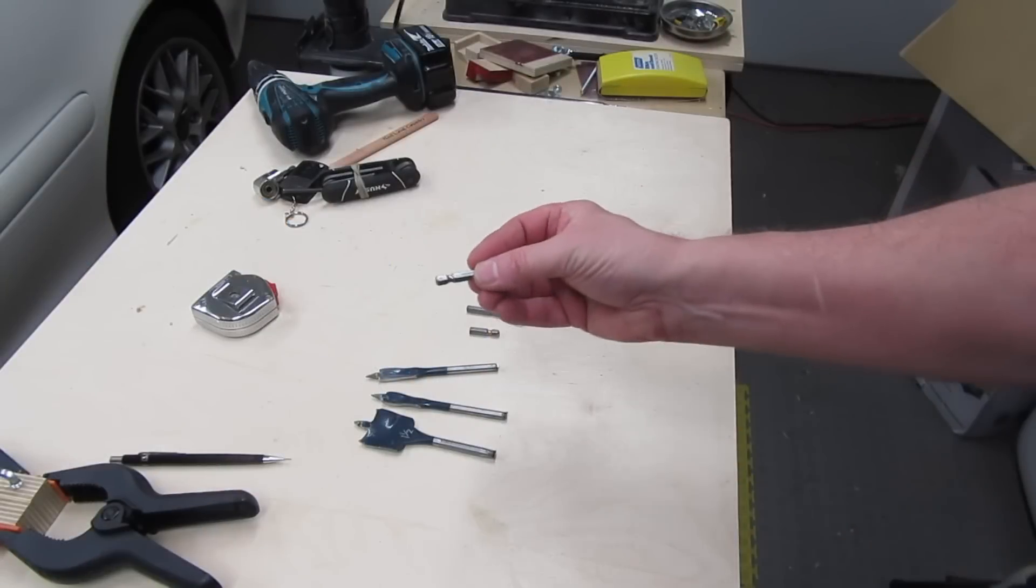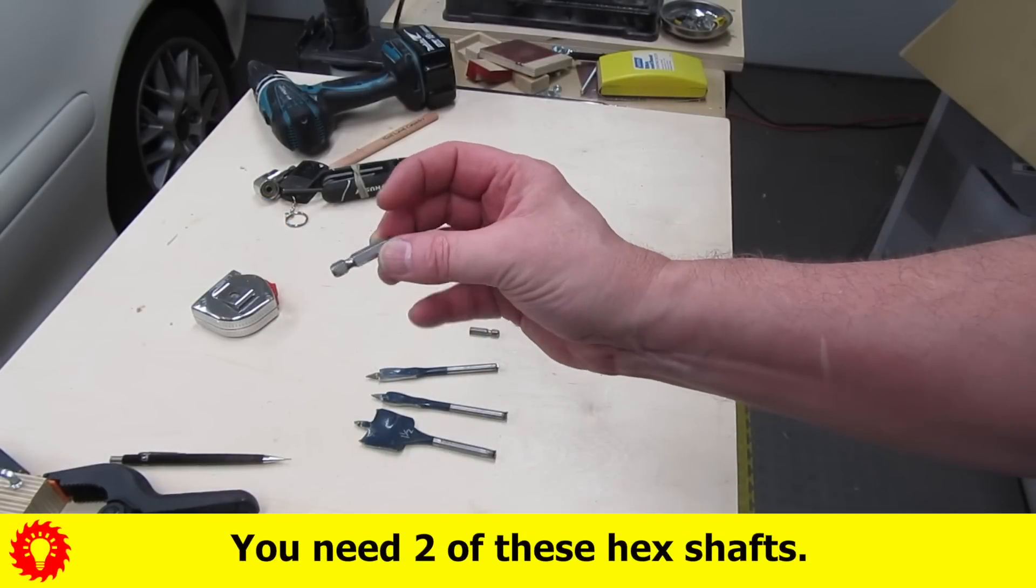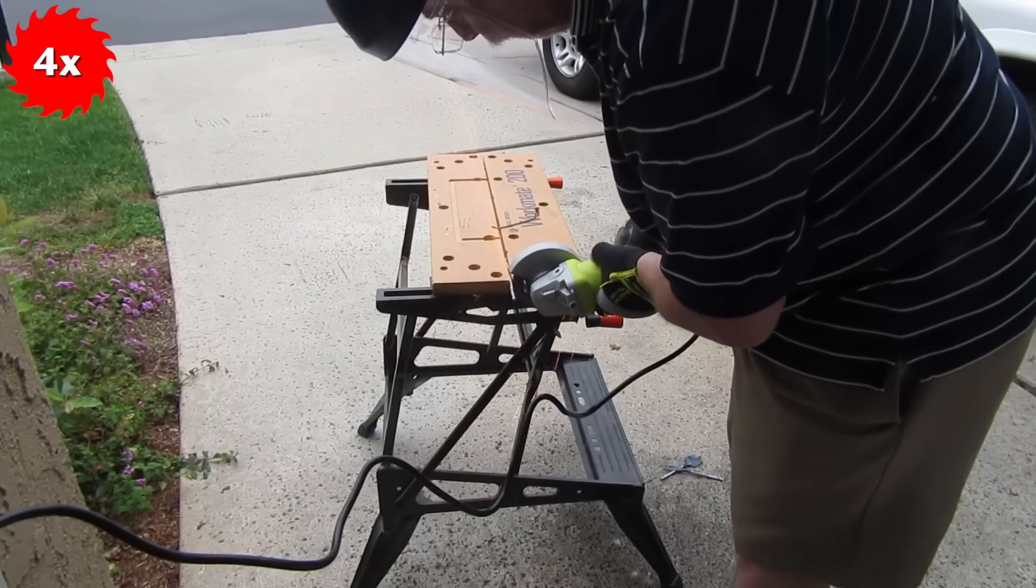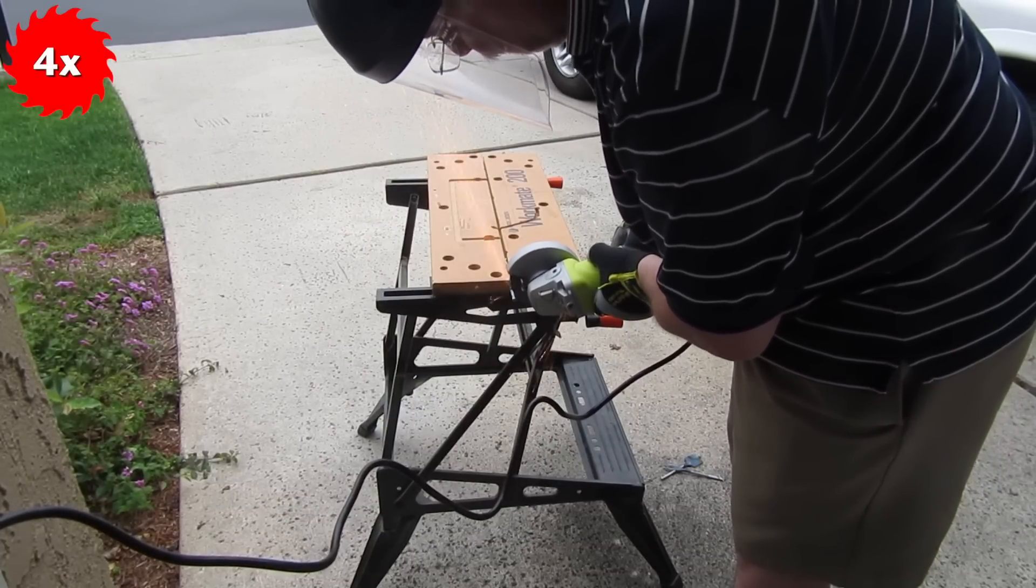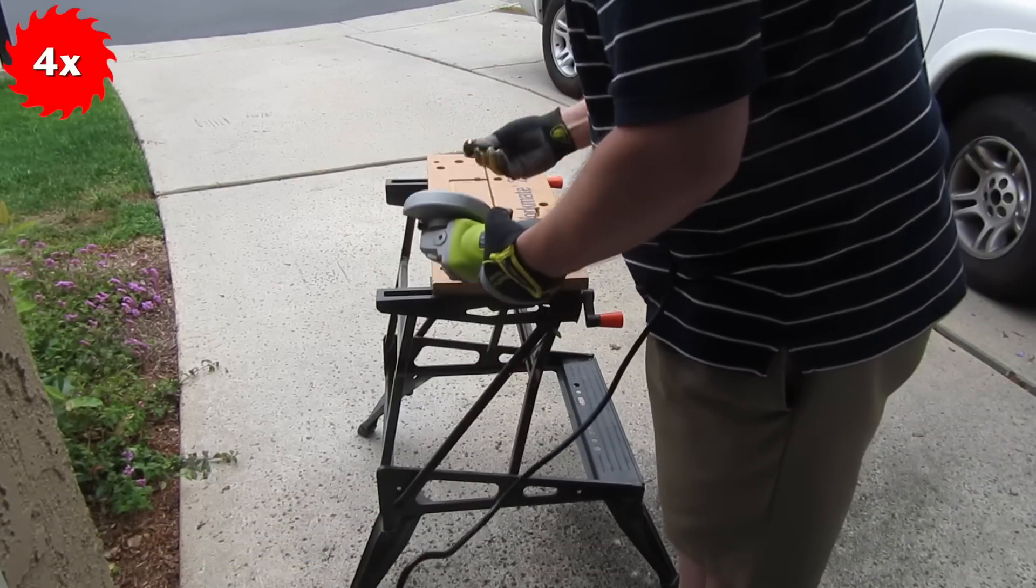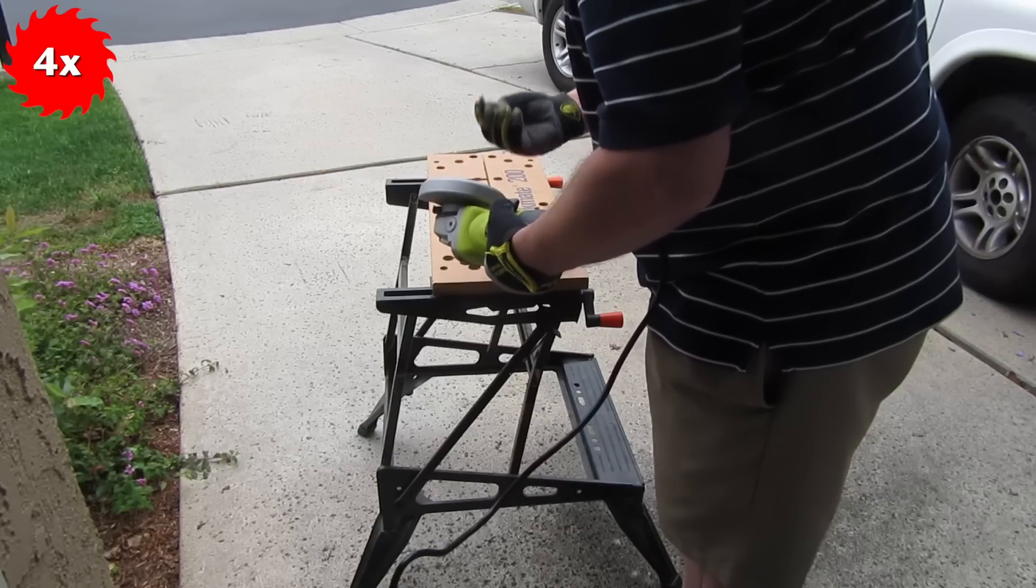I mentioned earlier that I got my hex shaft from drill bits I don't use anymore, and I did that by using my angle grinder. But you could use a hacksaw if you don't have an angle grinder. After cutting off each piece, I smoothed the edges a little on the angle grinder.